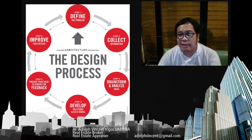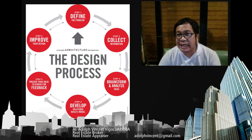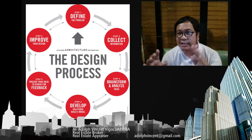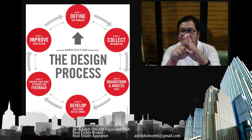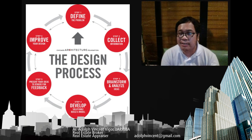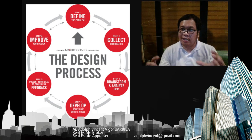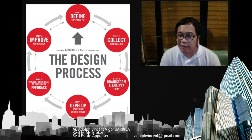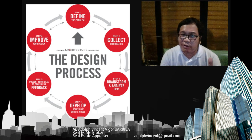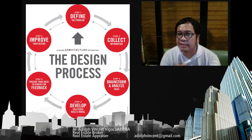Defining the problem also means listing down the spaces. For example, if you're going to design a hospital, you have to list down the major spaces — the major departments — and determine the relationships between the different large departments and the spaces under each major department. So define the spaces: what is the emergency department, for example, and what is its purpose? That's part of the design process.